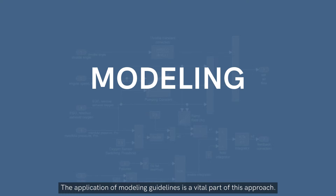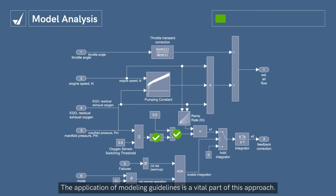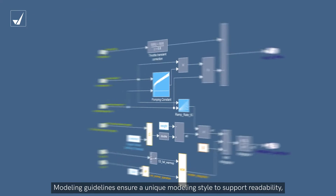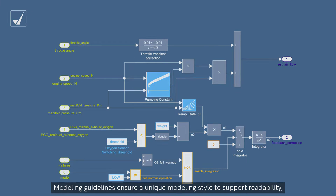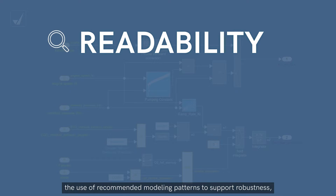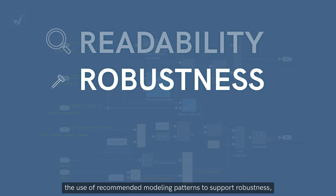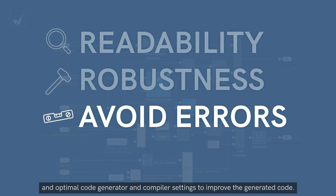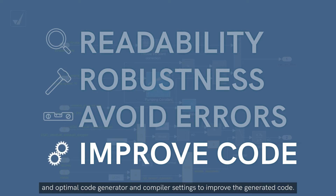The application of modeling guidelines is a vital part of this approach. Modeling guidelines ensure a unique modeling style to support readability, the use of recommended modeling patterns to support robustness, a consistent model configuration to avoid common errors, and optimal code generator and compiler settings to improve the generated code.